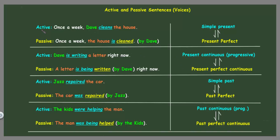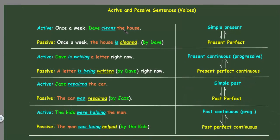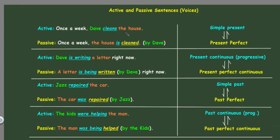The first example: once a week, Dave cleans the house. The subject here is Dave, and the object is the house. Remember, from active to passive we just need to switch the subject and object. So the house becomes the subject: the house is cleaned by Dave.